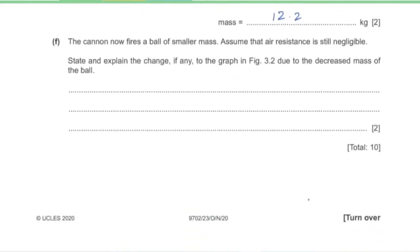Part F: The cannon now fires a ball of smaller mass; air resistance is still negligible. State and explain any change to the graph in figure 3.2. There is going to be no change, because acceleration due to freefall (9.81 m/s²) is the same for all masses as long as air resistance is negligible.